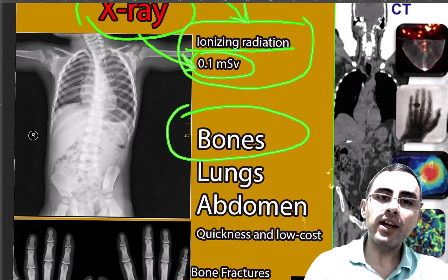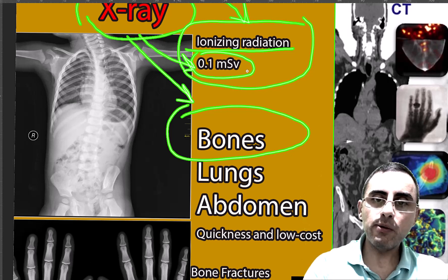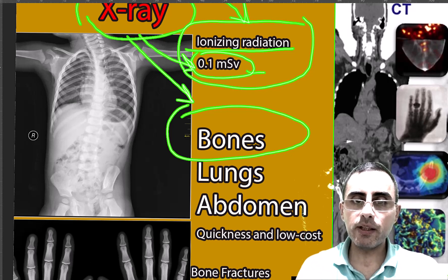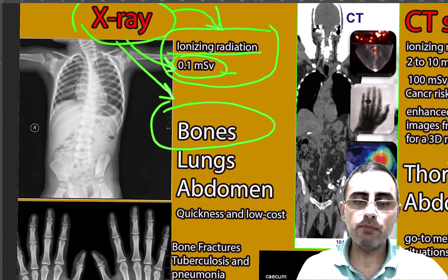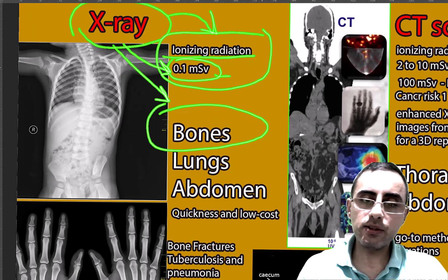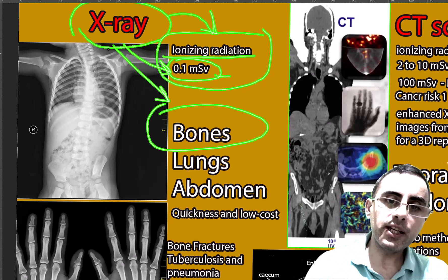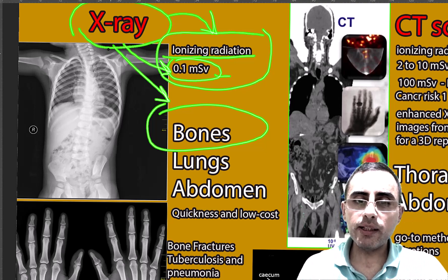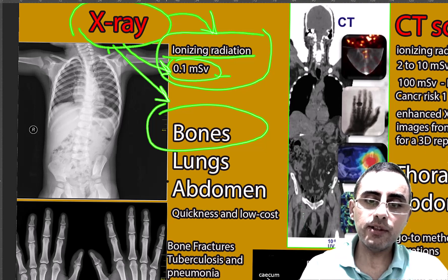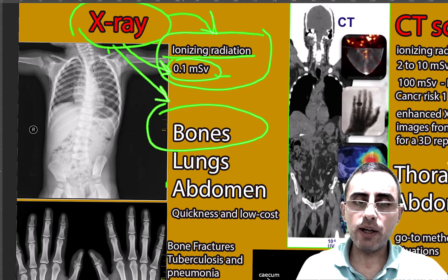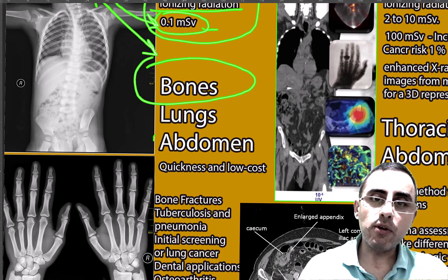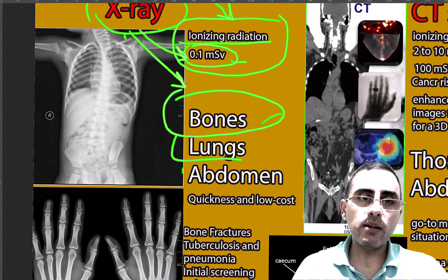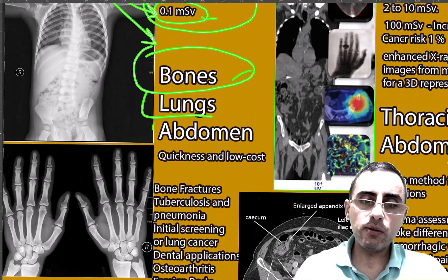X-ray is best for bones. If we want to see bone structures or bone fractures, X-ray is number one because it has low radiation, is fast, and is cost-effective. It sees bone structures well. X-ray can also visualize the lungs and abdominal cavity, though abdominal images are very low resolution.